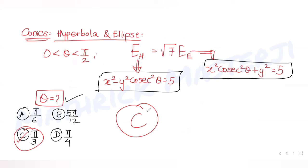I hope you've understood how to solve this type of question dealing with the concepts of hyperbola and ellipse. The answer is π/3. I'll see you tomorrow with more questions continuing our JEE Mains series. Please like, subscribe, and share the channel with friends preparing for JEE. Thank you!